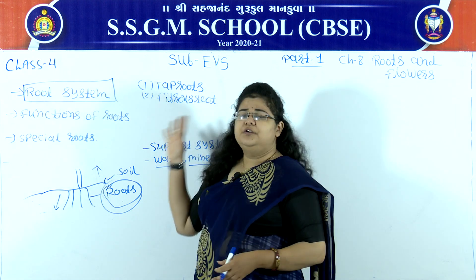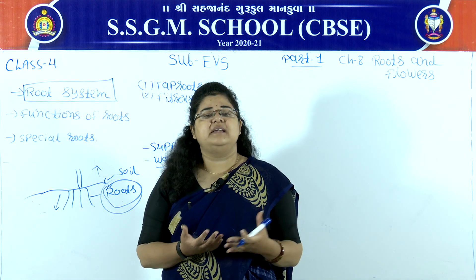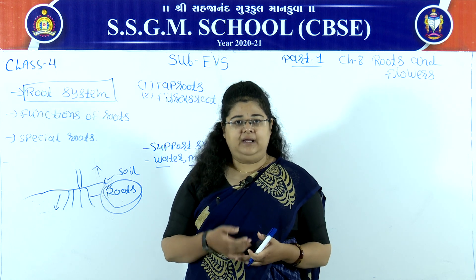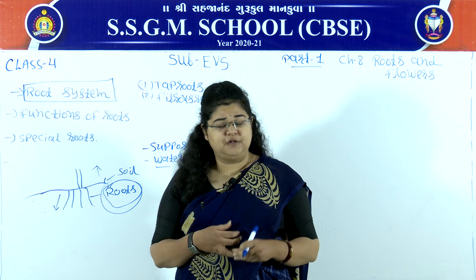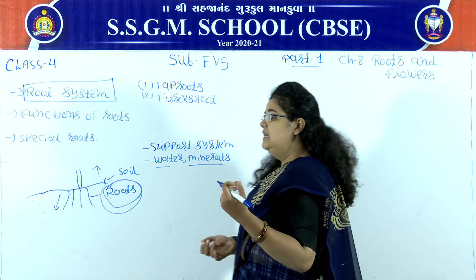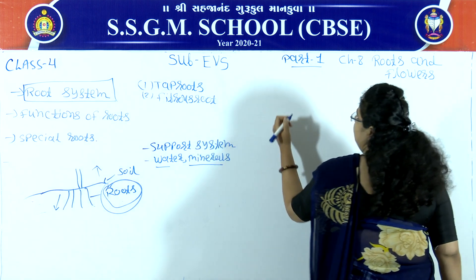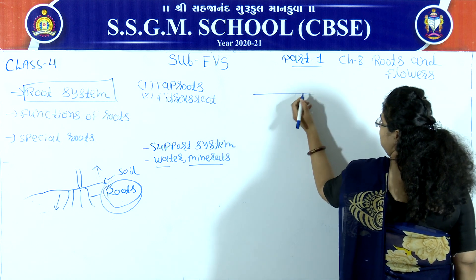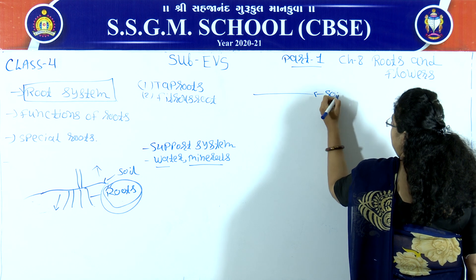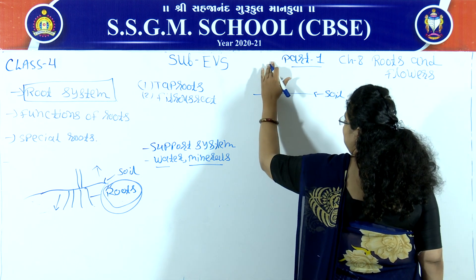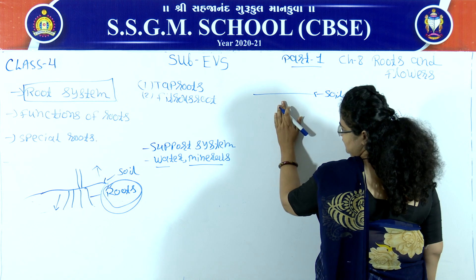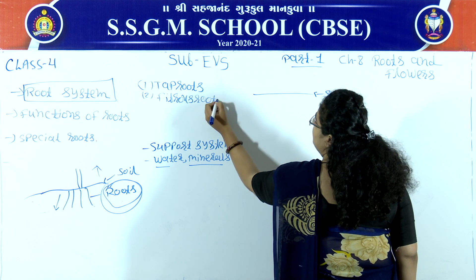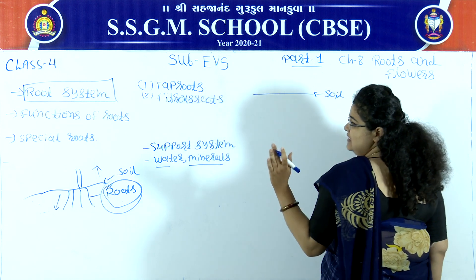So I will draw a figure here. You can see the figure to understand the difference between tap roots and fibrous roots. If we talk about tap roots, you can understand that this is the soil portion. The plant will grow and the roots will emerge. The tap roots will be the main root going downward.